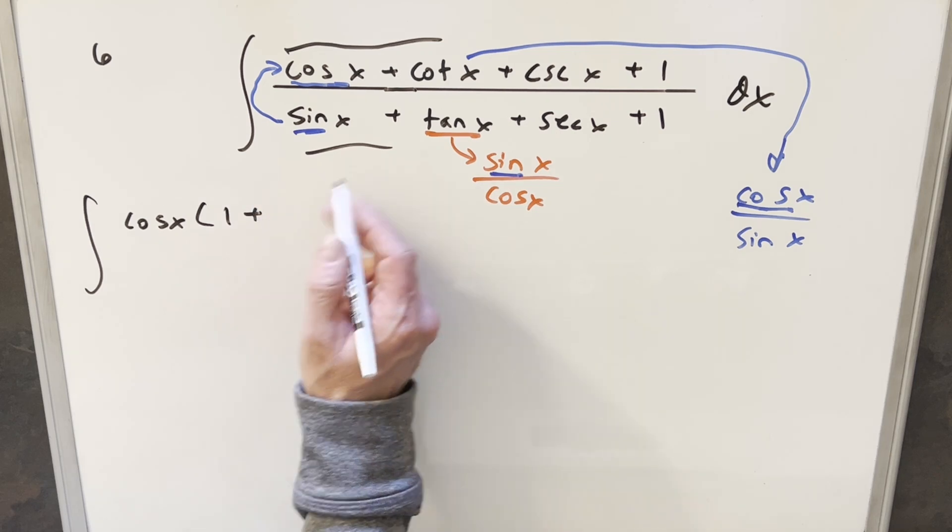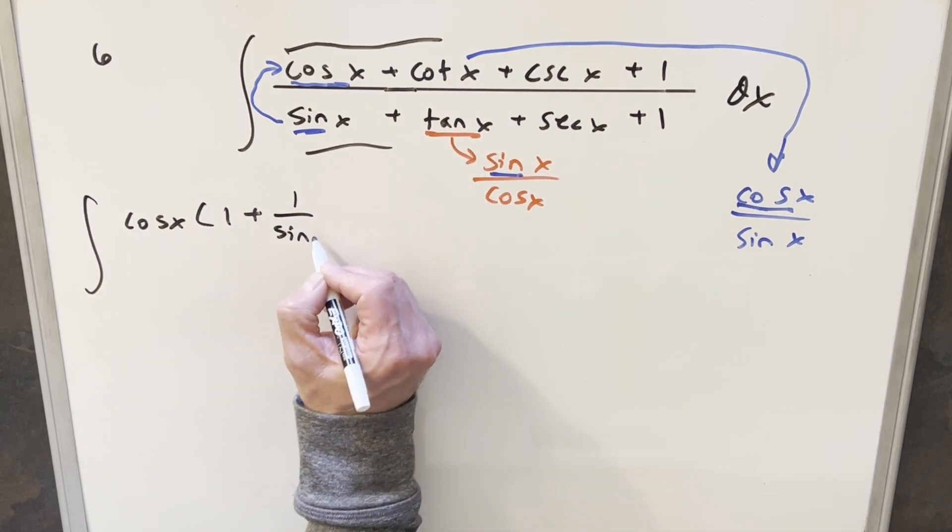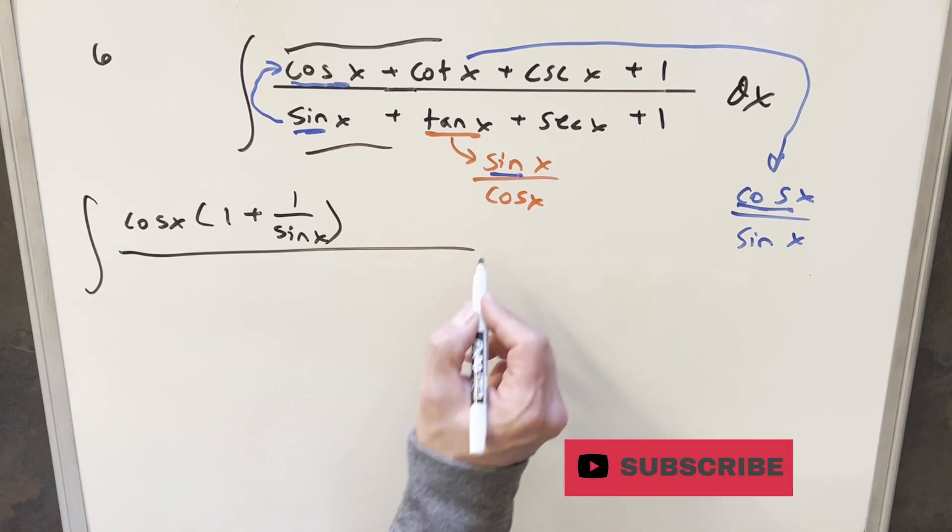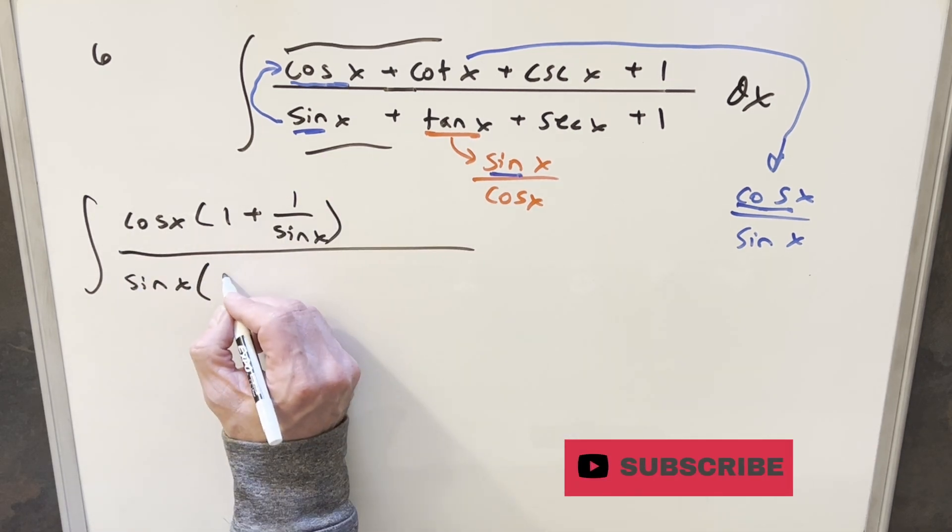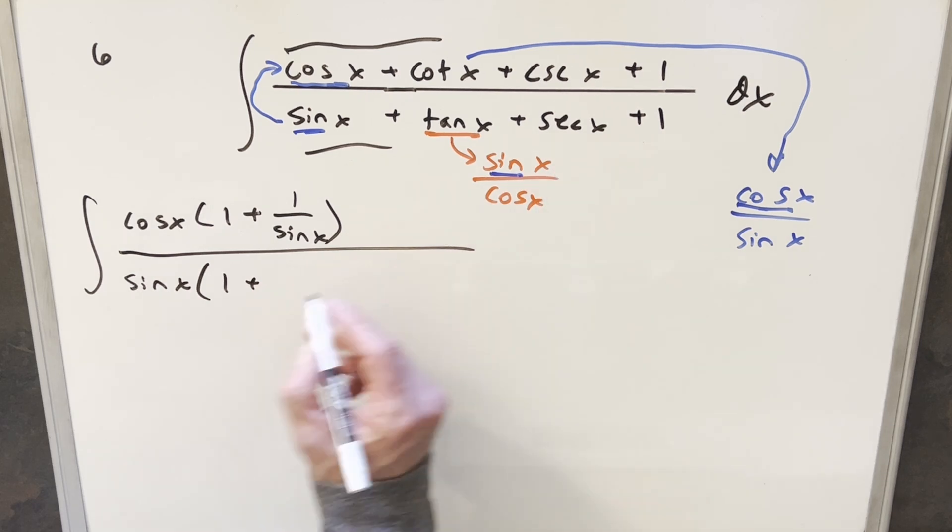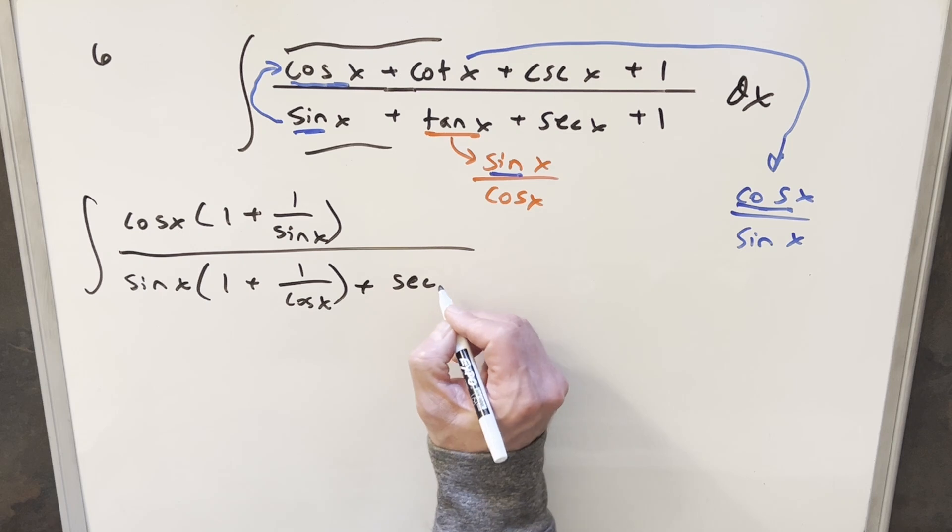So I factor out cosine x. I end up with just 1, and then cotangent x when we factor the cosine out, it just becomes 1 over sine x. And then doing the same thing in the denominator, I factor out sine x and we end up with 1 plus, taking the sine out of that, we end up with 1 over cosine x. Then let's bring all this other stuff along just for completeness.